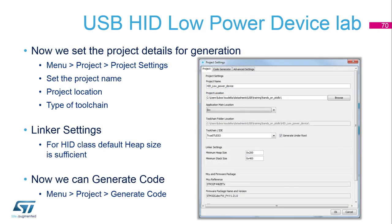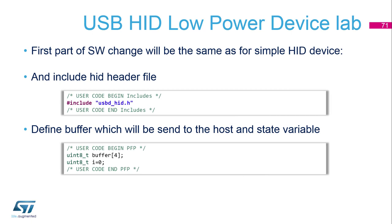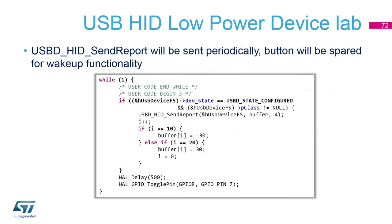Now we can generate the project for TrueStudio and move directly to the code. In the code, we will more or less reuse the configuration from the mouse example — add the include, define a buffer, and put the mouse movement into the while loop. Compared to the previous mouse example, we won't use the button for movement here — the movement will be permanent, and the Nucleo board button will be reserved for the remote wake-up functionality.